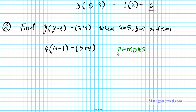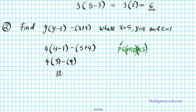The highest order we have to execute first is P — the parenthesis. We have to evaluate what's in these parentheses first. So we have 4 × (4 − 1) − (5 + 4), giving us 4 × 3 − 9. Multiplication and division go together from left to right, and addition and subtraction are last. So we multiply first: 4 times 3 is 12, then 12 minus 9.